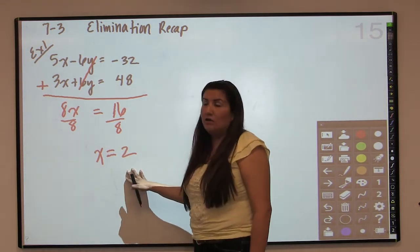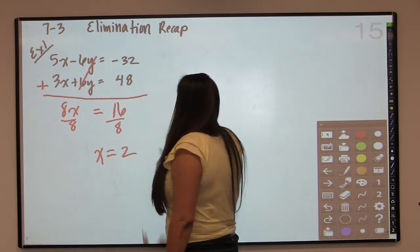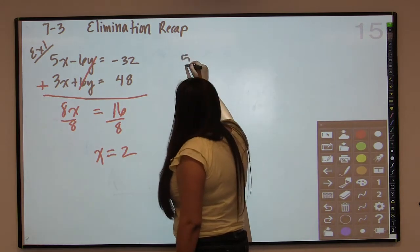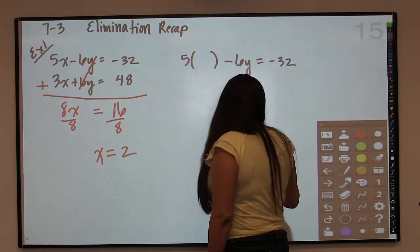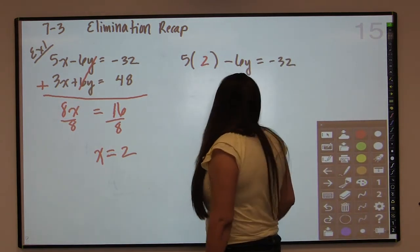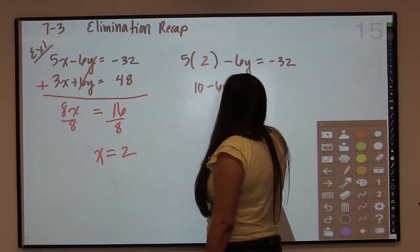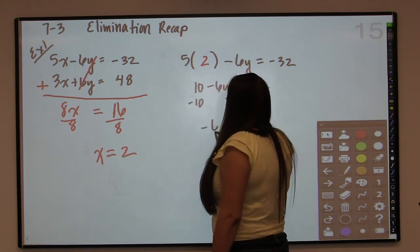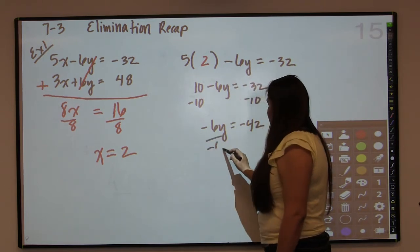Once you have the first variable solved for, then you can go back and plug it into either equation. It doesn't matter which equation you plug it into. So I'm just going to pick the first one, 5x minus 6y equals negative 32. And then we're going to replace x with 2 and solve this. So 10 minus 6y equals negative 32. We subtract 10 from both sides. Negative 6y equals negative 42. Divide by negative 6.